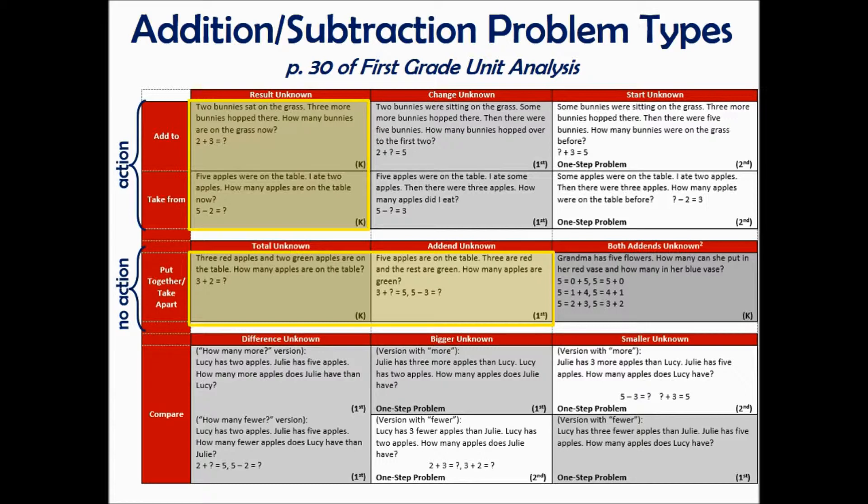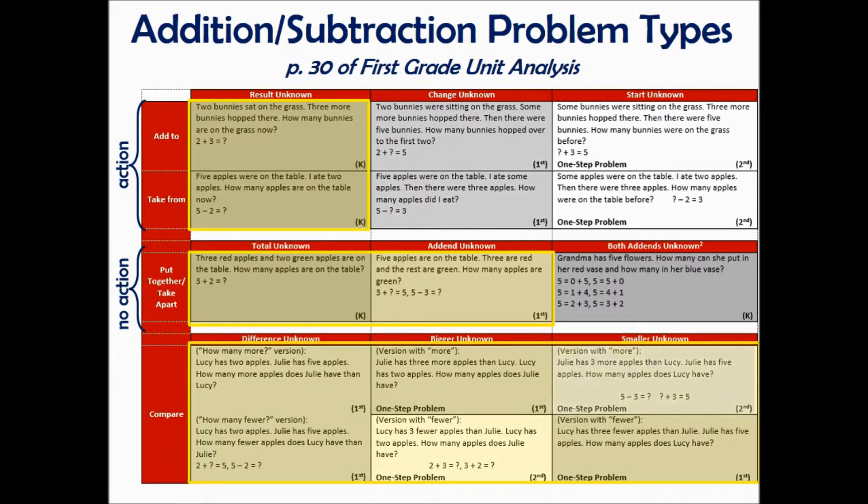The last problem type students will see in first quarter focuses on making comparisons. This will occur in weeks eight through nine and is paired with the first grade interpreting data standards, so that students can answer questions about how many more and how many less using data. These problem types are introduced at the beginning of first grade to allow ample practice across the school year. However, students have all school year to master first grade standards. As you enter weeks four through seven, which focus on using a variety of strategies to solve problems, you will still want to continue exposing students to all three problem types.